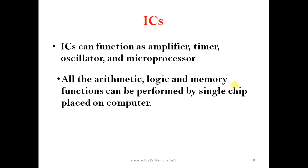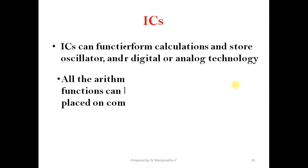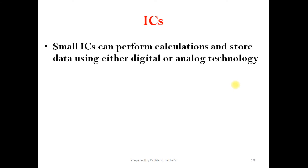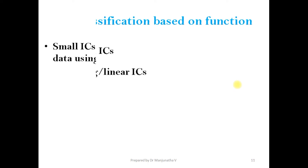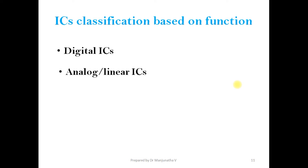All automatic logic and memory functions can be performed by a single chip placed on a computer. Small ICs can perform calculations and store data using either digital or analog technology. Based on this, ICs can be classified into two types: digital ICs and analog ICs.